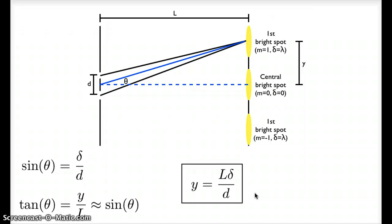So if I put in delta equals lambda, then y will be the distance from the center of the screen to the first bright spot. If I put in delta equals lambda divided by 2, then it would be the distance from the center of the screen up to the first dark spot.